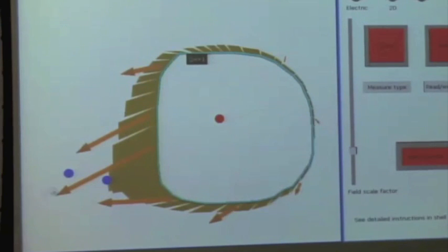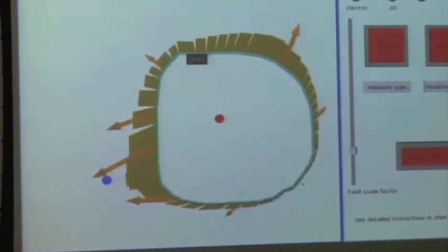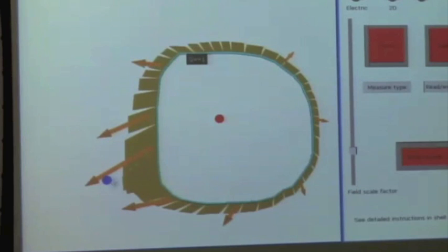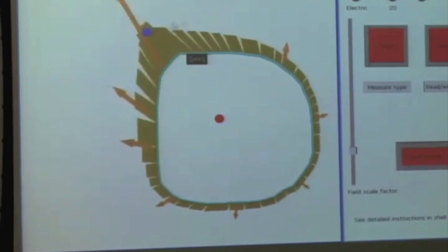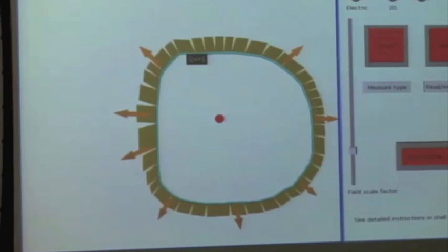That, again, the shape of the surface doesn't matter as long as it's a closed surface. The placement of the charge inside doesn't matter. And charges on the outside, no matter where they are, don't matter. It's just the total flux of the closed surface tells you about the charge inside.